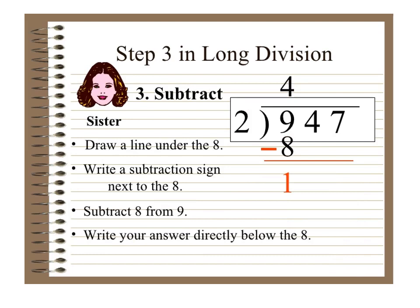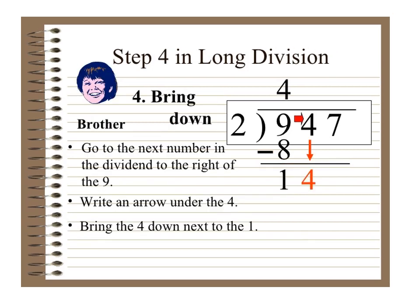Step 3 is subtract. You draw a line under the 8 and write a subtraction sign next to it. So you subtract 8 from 9: 9 minus 8 equals 1. Write your answer directly below the 8. Now bring down — go to the next number in the dividend, 947, which is 4 to the right of the 9. Write an arrow under the 4 and bring the 4 down next to the 1, giving you 14.